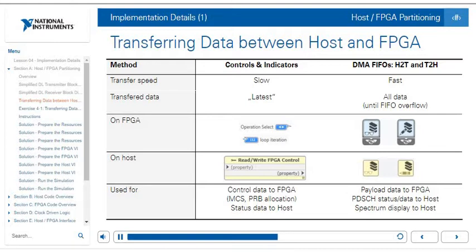The second method uses direct memory access FIFOs, or DMA FIFOs. These come in host-to-target (H2T) FIFOs going from host down to the FPGA, or target-to-host FIFOs going from the FPGA up to the host. These are fast and stream all data losslessly until the FIFO overflows. On the FPGA, you have FIFO read and write nodes, and on the host you similarly have FIFO read and write nodes, specifying the FIFO name in each block. DMA FIFOs are used to pass payload data to the FPGA, PDSCH status and data to the host, and to stream spectrum data to the host.